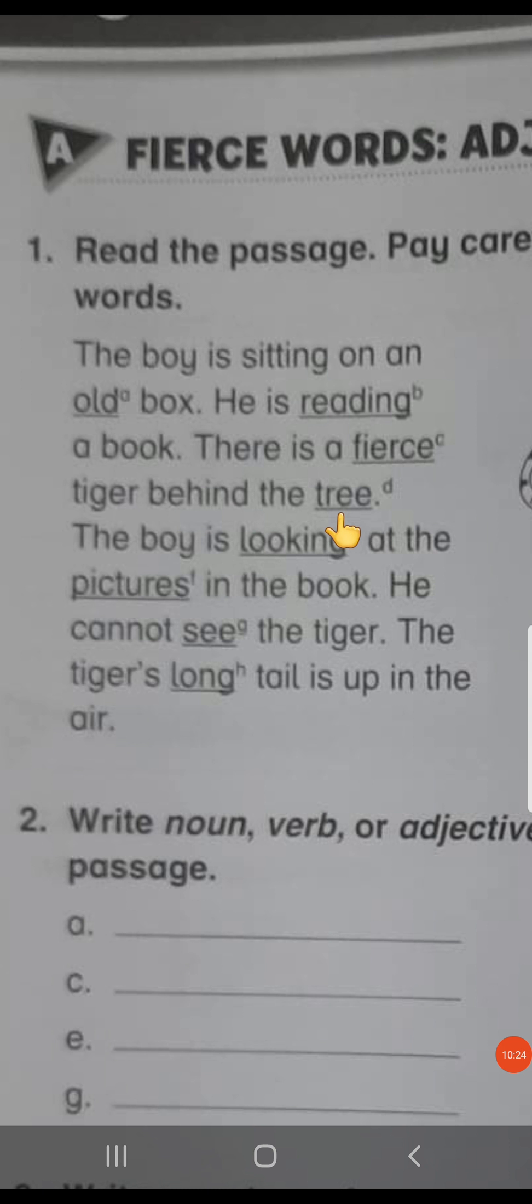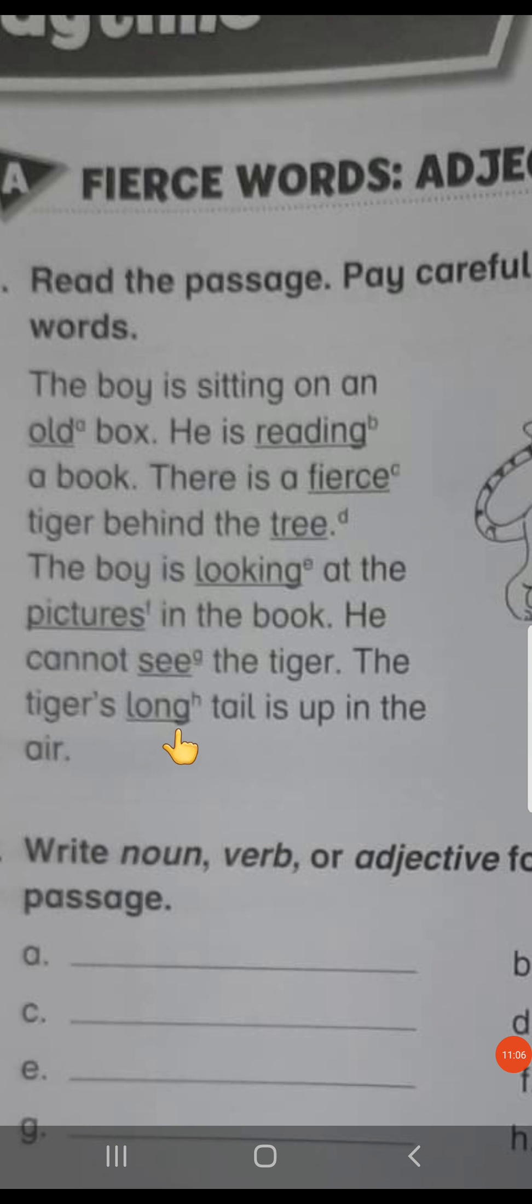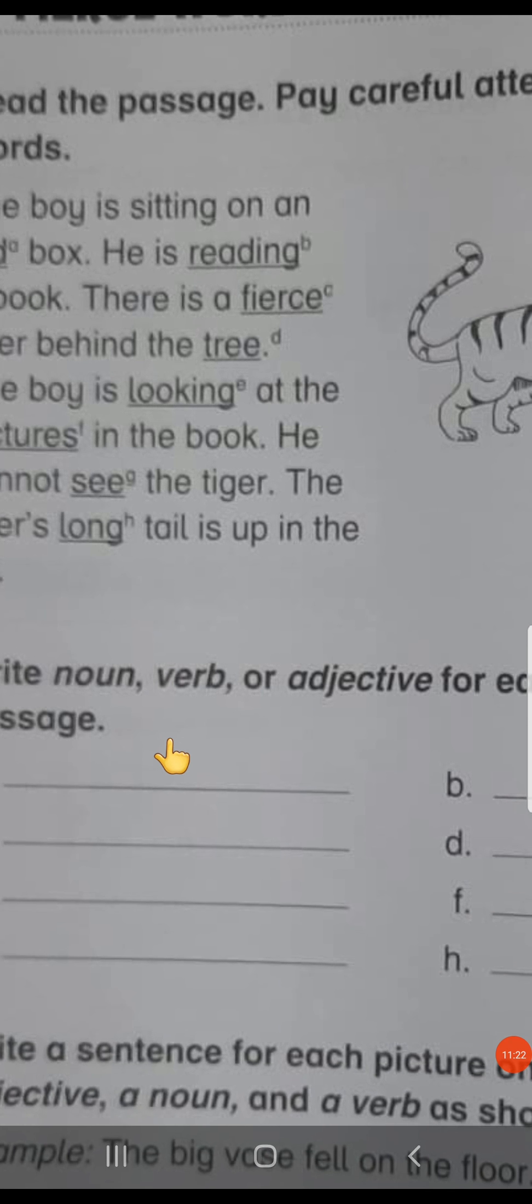Behind the tree. Tree is the name of a thing. It is a noun. The boy is looking. Looking is again an action. So, it is a verb. At the pictures. Pictures is again a name of a thing. So, it is a noun in the book. He cannot see the tiger. They have underlined see and there is a small g over here. See is again an action and action words are verb. The tiger's long tail is up in the air. Long is describing the tail. Tail is a noun and it is long is modifying this noun. So, long is adjective. And it is a small h over here. So, we will write adjective in part h.